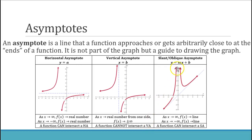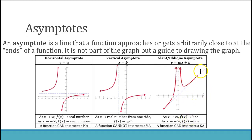A slant or oblique asymptote is a line that is neither perfectly vertical nor horizontal, written as y equals mx plus b. As x approaches infinity, the function approaches that line, getting closer and closer. Similarly, as x approaches negative infinity the graph also gets close to that line. A function can intersect a slant asymptote.